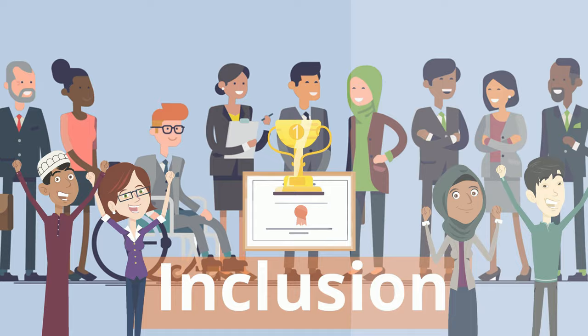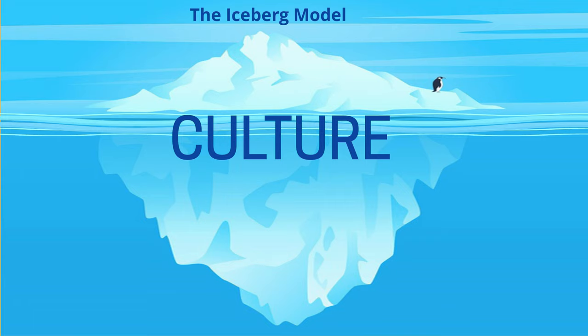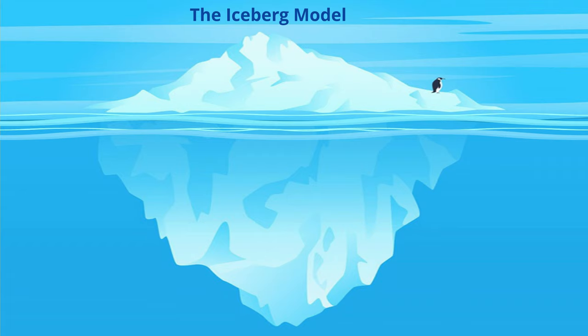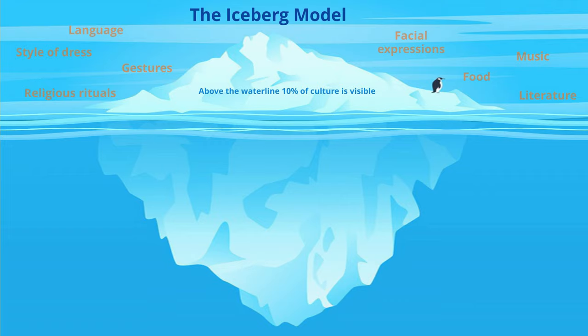The idea behind the iceberg model is that culture is pictured as an iceberg. Only a very small proportion of the iceberg is visible above the waterline. The tip of the iceberg is in fact supported by a much larger, although invisible part underneath the water. This part of the iceberg is its foundation. Above the waterline, examples of visible parts include food, style of dress, music and language. But the powerful dimensions of culture are the more difficult to spot.